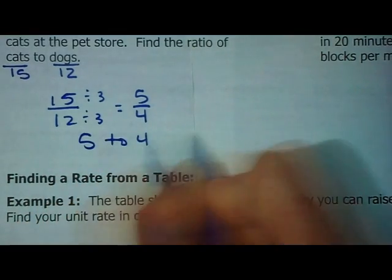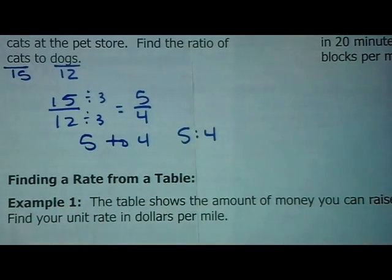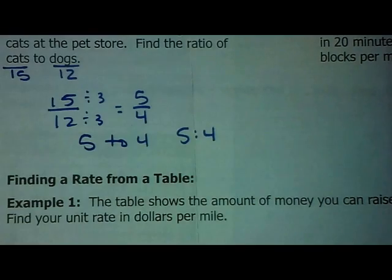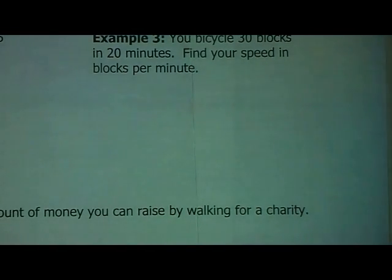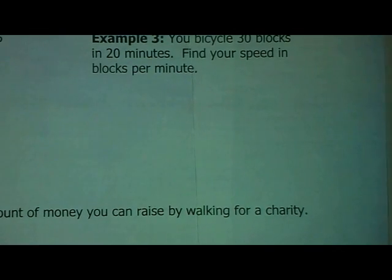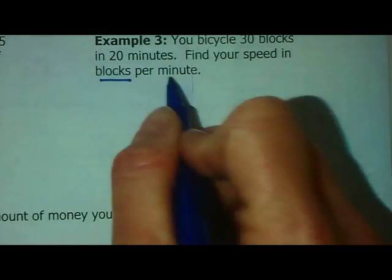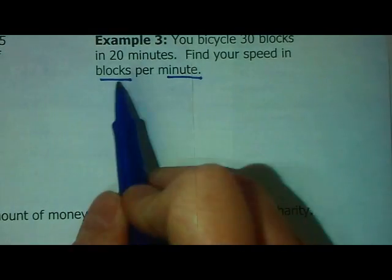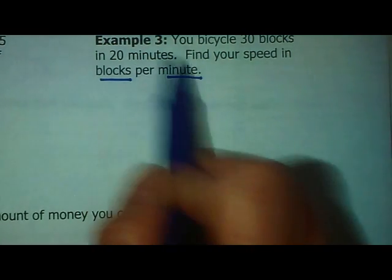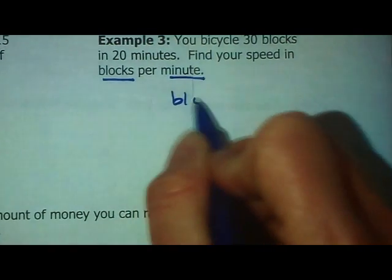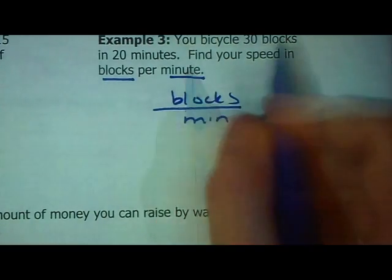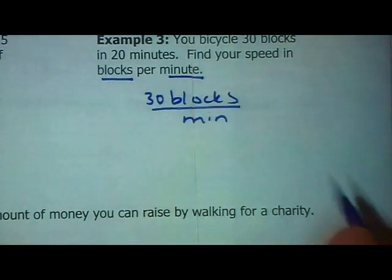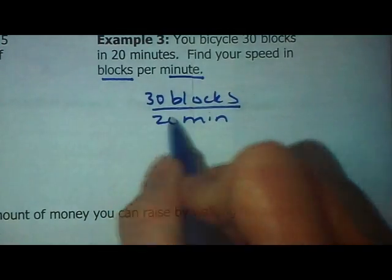Other ways to write it. There's the gross way. Colon. All set. Alright. Last one of these verbal situations. You bicycle 30 blocks in 20 minutes. Find your speed in blocks per minute. So, this is a rate because we have two units. We have the number of blocks per minute. So, it needs to be blocks over minutes because blocks happens first. So, it says 30 blocks. I'm going to put 30 with the blocks. 20 minutes. I'm going to put 20 with the minutes.